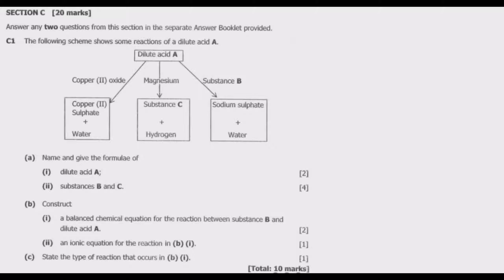Question C1: The following scheme shows some reactions of a dilute acid A. Dilute acid A is reacted with copper(II) oxide to give copper(II) sulfate plus water — a standard case where we react an acid with a base to get a salt and water. Then acid A is reacted with magnesium to get a substance C plus hydrogen. This is the standard general equation where we react an acid with a metal to give a salt C and hydrogen. So C is basically a salt.